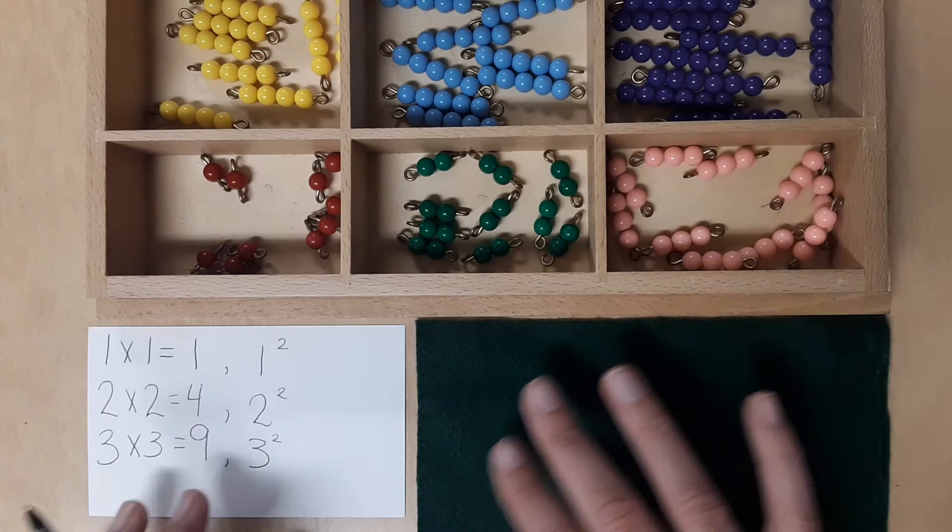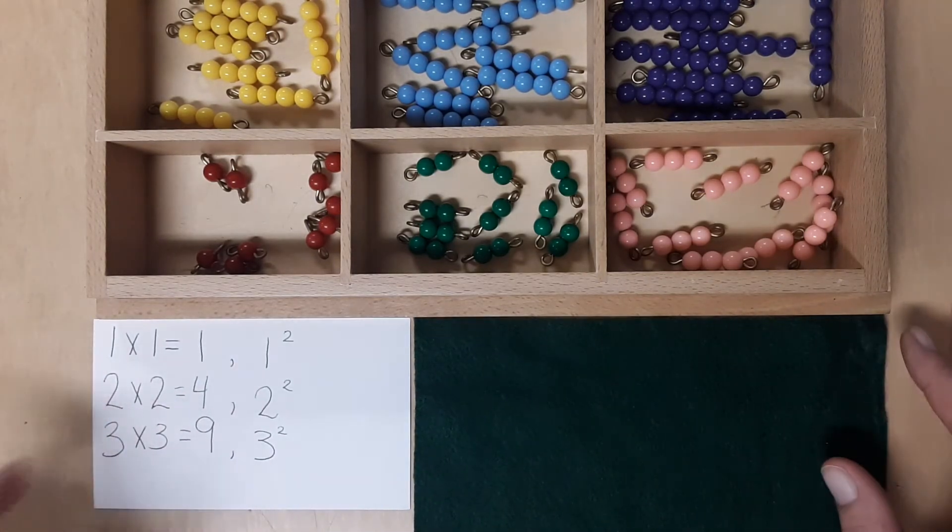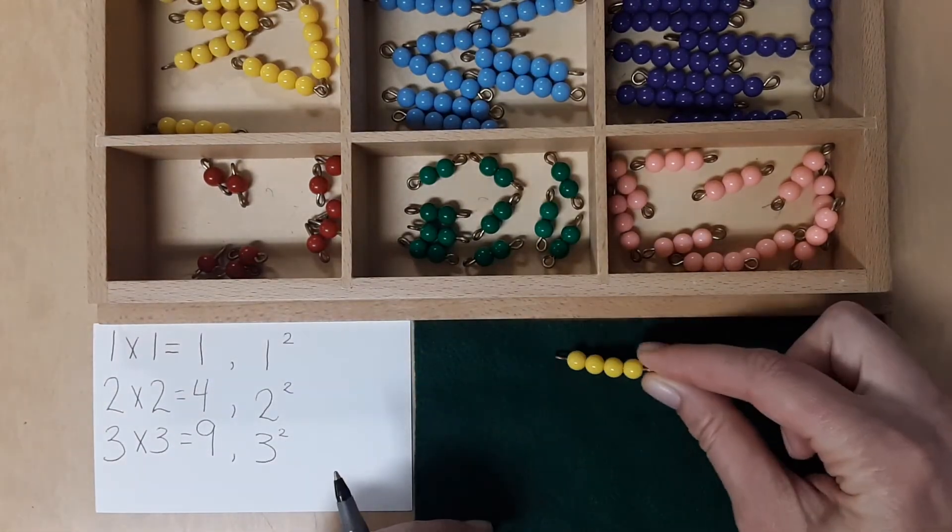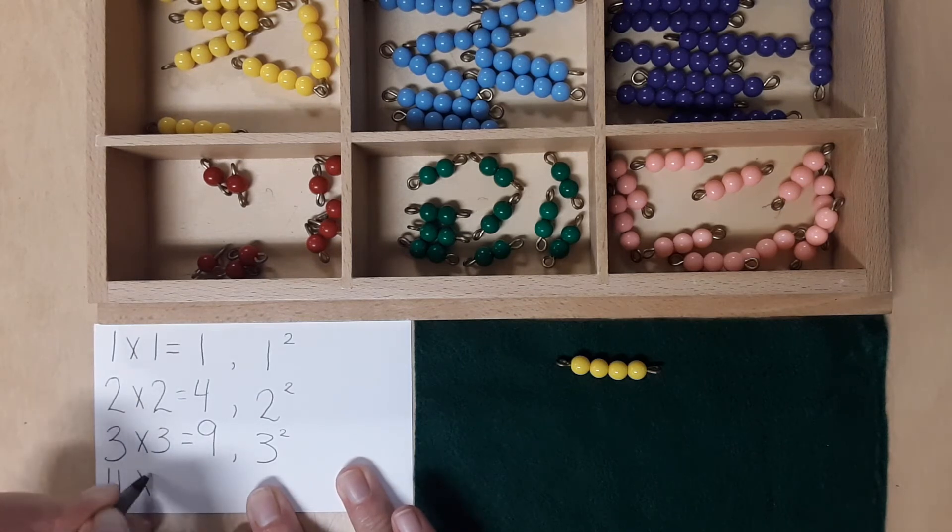Alright, I'm going to do one more. I think that's all I have room for on my paper. And then you can do the rest by yourself. So next are the 4's. And we're going to multiply 4 by itself. So 4 times 4 equals.